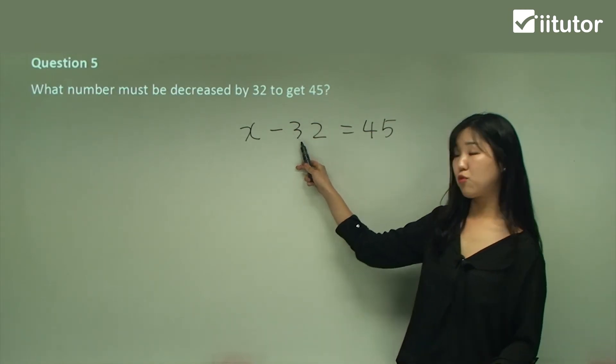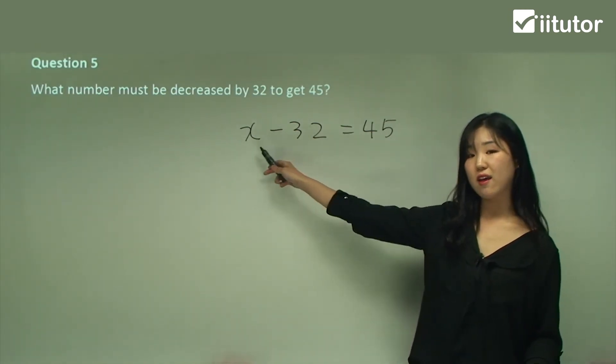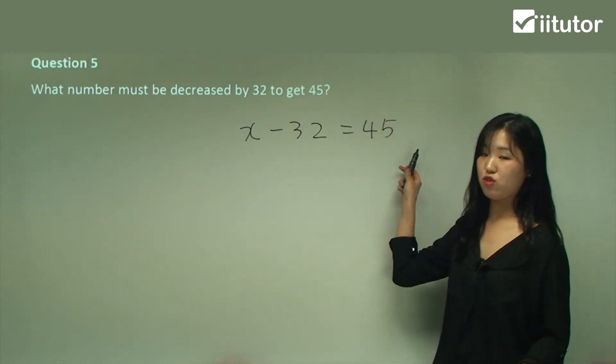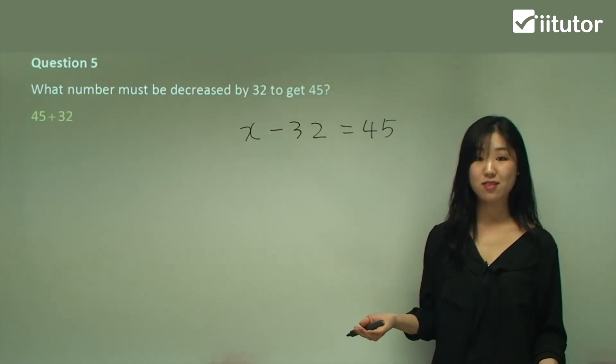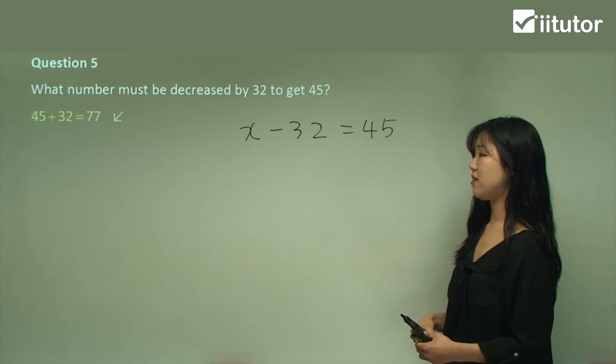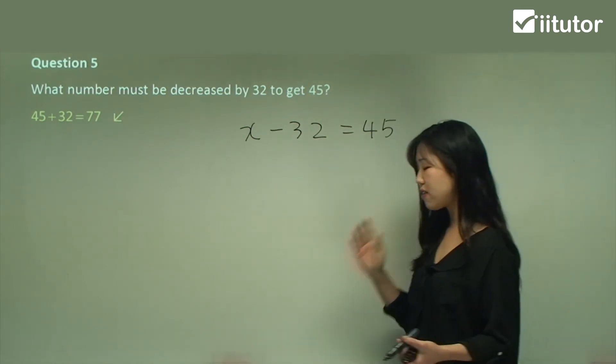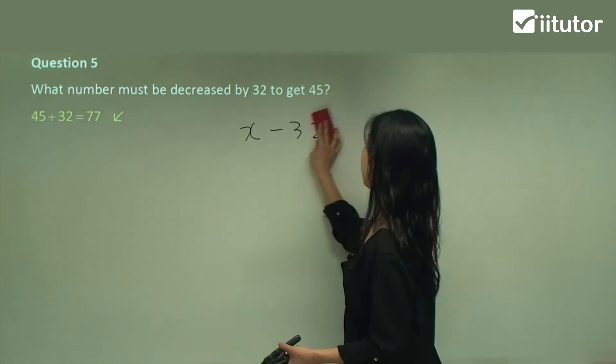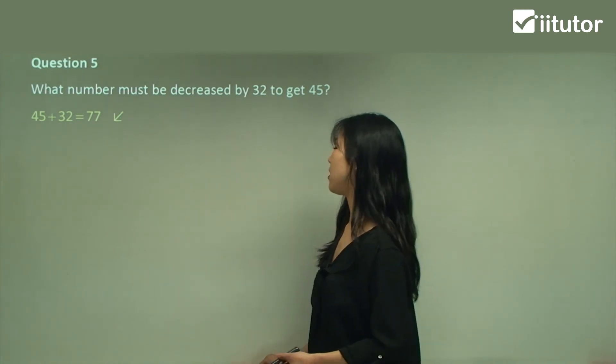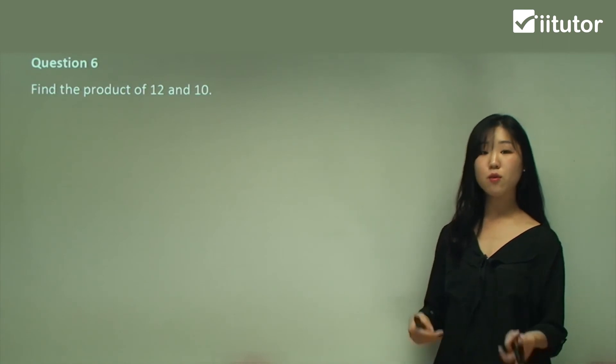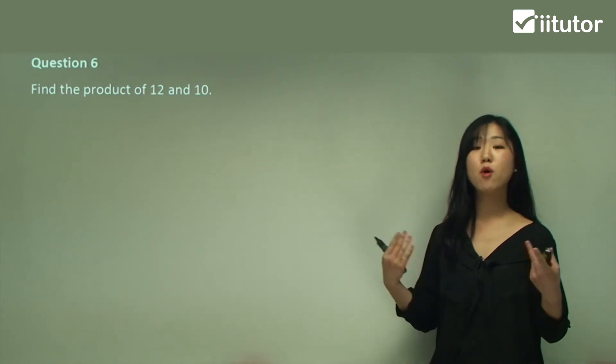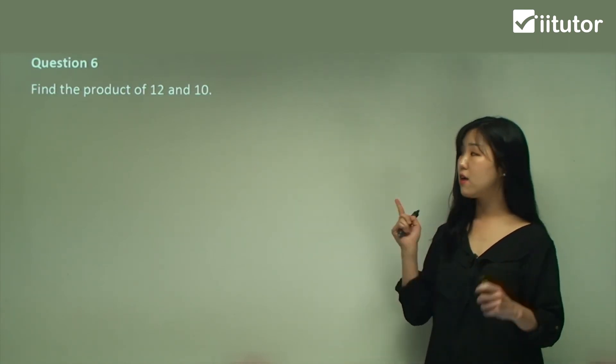So I see how we're subtracting 32 to get x by itself. We need to add 32 to move it over to the other side. So we're basically just doing 45 plus 32, so it's 77. That's all you need to do. So you can utilize some algebra if it helps. I think it always helps in questions like these. Question six: find the product of 12 and 10. What does product mean? Multiply, times together. So it's going to be 12 times 10, which is 120.